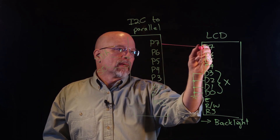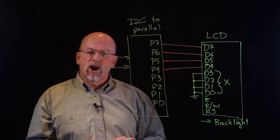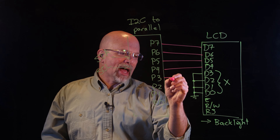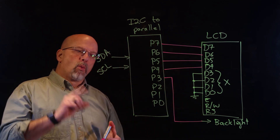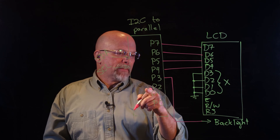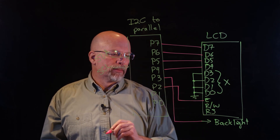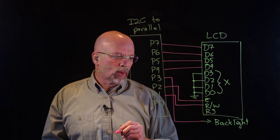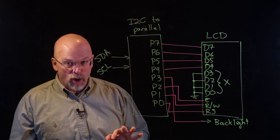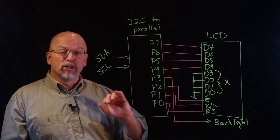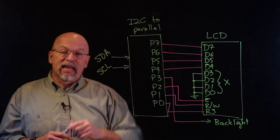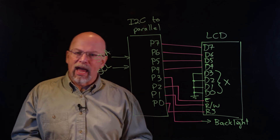P7, P6, P5, and P4 connect directly to the four data bits D7–D4. P3 controls the backlight — a 1 on P3 turns it on, a 0 turns it off. P2 connects to the enable. P1 connects to read-write, which should always be 0 since we're always doing a write operation. P0 connects to register select. So internally that's the wiring, and all we see externally is SDA and SCL, which connect to the I2C bus on our Raspberry Pi.